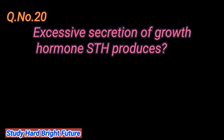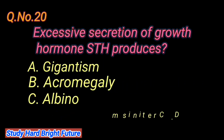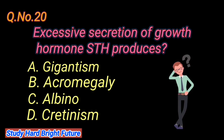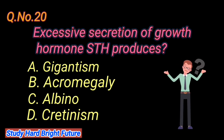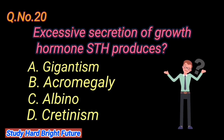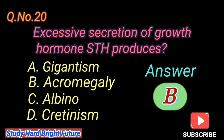Question number 20/21: Excessive secretion of growth hormone produces. A. Gigantism, B. Acromegaly, C. Albino, D. Cretinism. The right answer is B. Acromegaly.